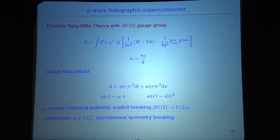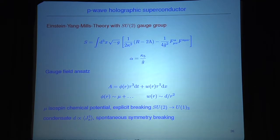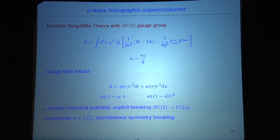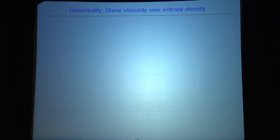We choose an ansatz where one field involves a chemical potential interpreted as an isospin chemical potential, since we have two flavors like u and d quarks. This chemical potential explicitly breaks the SU(2) symmetry to a U(1)_3 symmetry. Solving the equations of motion with this ansatz, we find that a function has no leading term — only the subleading term at the boundary — which means we have spontaneous symmetry breaking, and this condensate is actually proportional to a current component.